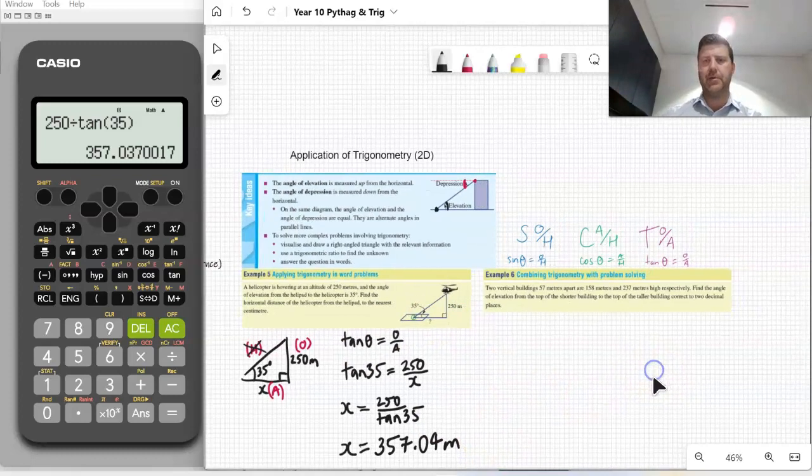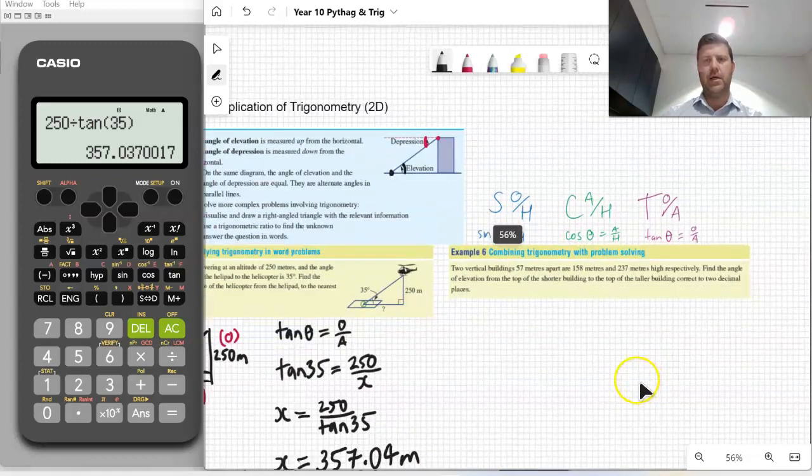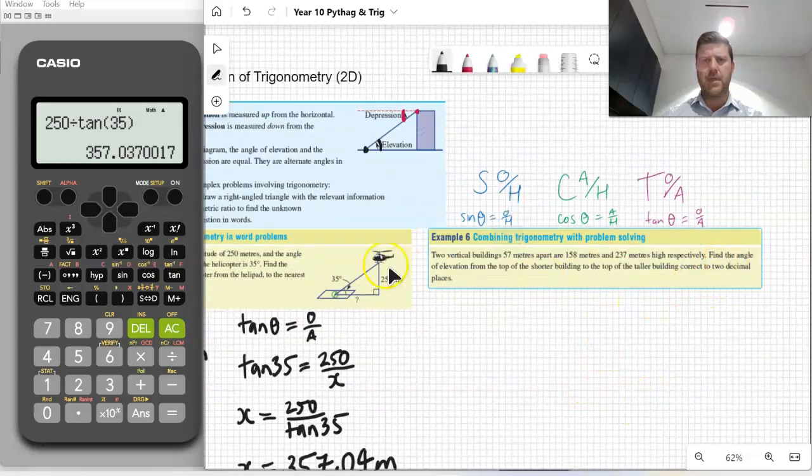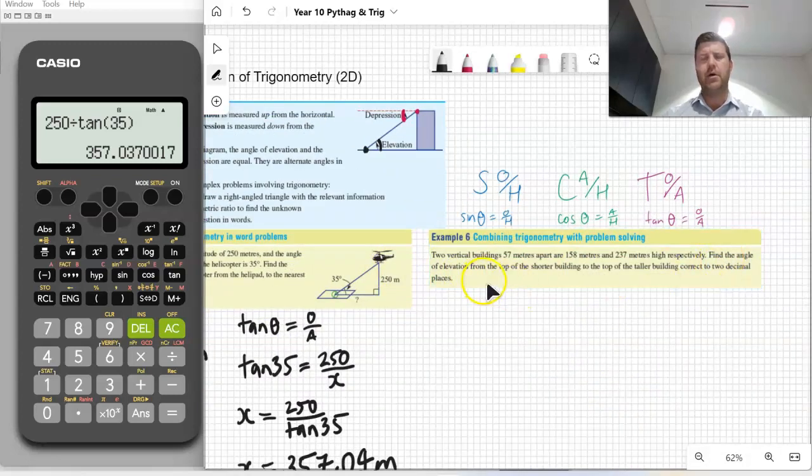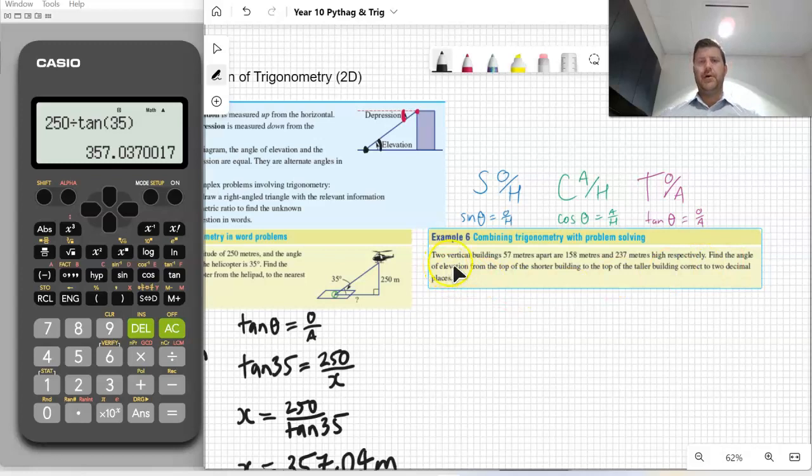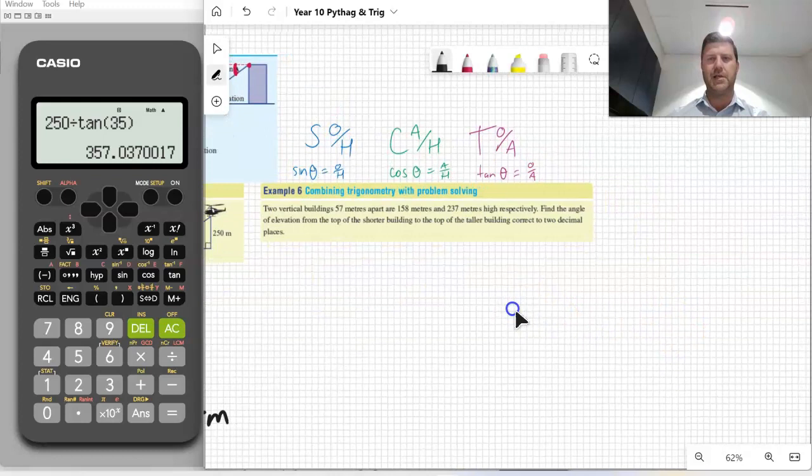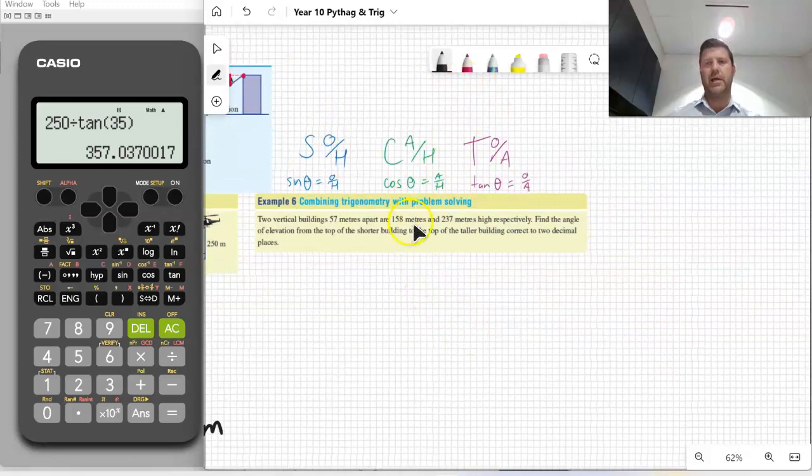Second example here is a little bit different because I'm going to be asked to work out the angle of elevation there. Question is two vertical buildings, 57 meters apart, 158 meters and 237 meters high respectively. Find the angle of elevation from the top of the shorter building to the top of the taller building, correct to two decimal places. A little bit harder because there's no diagram given to us in this one. So I'm going to start by just drawing a rough sketch of that problem and then getting the triangle.